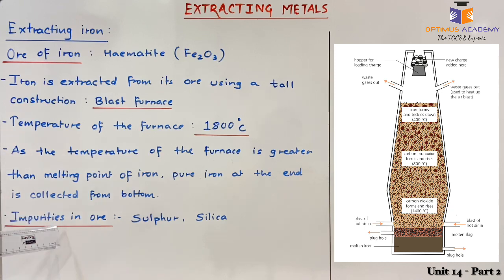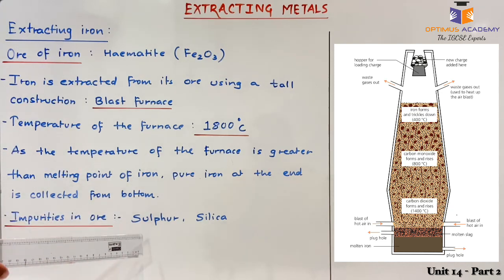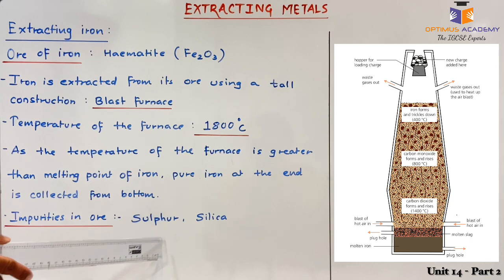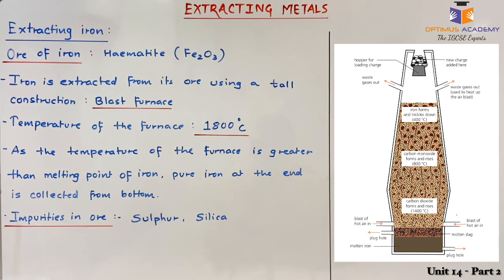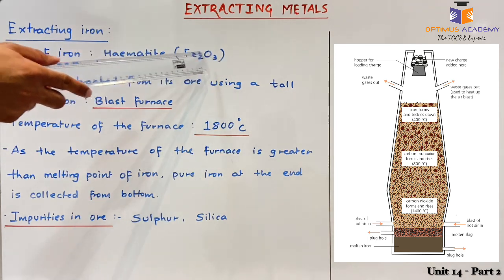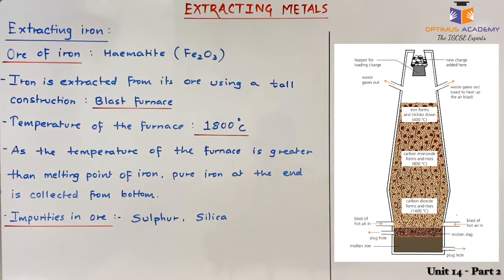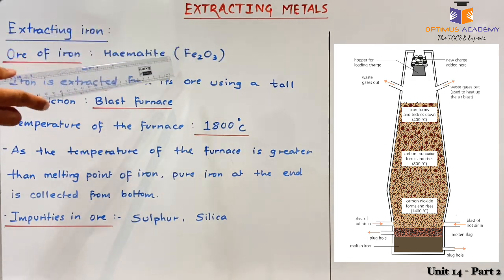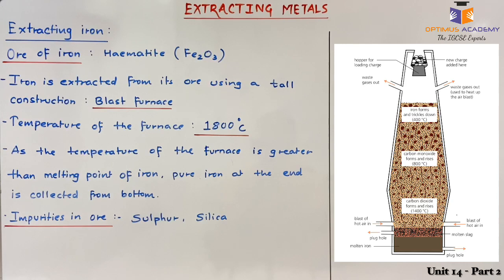Impurities in the ore of iron are basically sulfur and silica impurities. In our process, we are going to discuss how we remove these impurities from iron, and of course how to remove oxygen, because we want pure iron from Fe2O3.